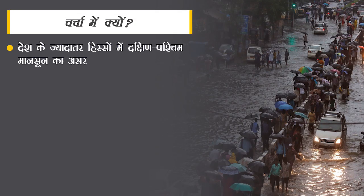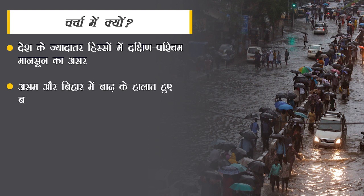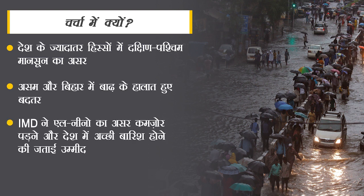भीषण गर्मी के बाद अब हर किसी की निगाहें आसमान पर टिकी हुई हैं। कहीं बादलों के बरसने के इंतजार में तो कहीं इस उम्मीद में कि बादल बरसना बंद हों और बाढ़ का खतरा टले। इन दिनों देश के ज्यादातर हिस्सों में दक्षिण-पश्चिम मानसून का असर देखा जा रहा है। लगातार बारिश से असम और बिहार में बाढ़ से हालात बत्तर हो गए हैं, तो दूसरी तरफ कुछ जगहें ऐसी भी हैं जहां लोग एक बूंद पानी को भी तरस रहे हैं।